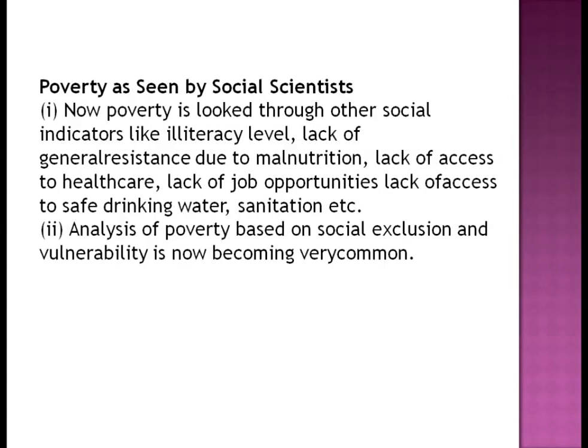Poverty as seen by the social scientist: poverty is looked through social indicators like illiteracy level, lack of general resistance due to malnutrition, lack of access to healthcare, lack of job opportunity, and lack of access to safe drinking water and sanitation. Analysis of poverty based on social exclusion and vulnerability is now becoming very common.